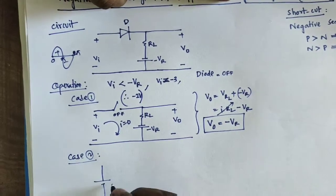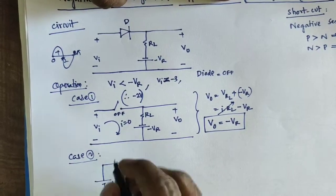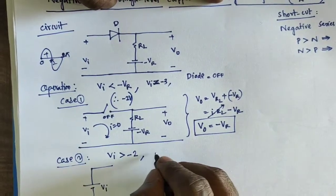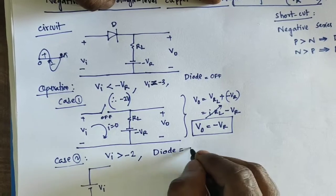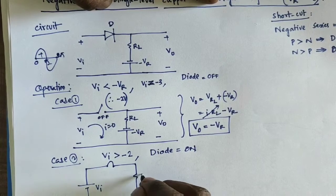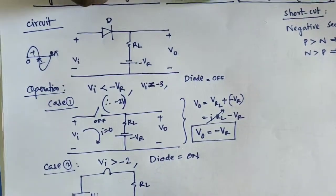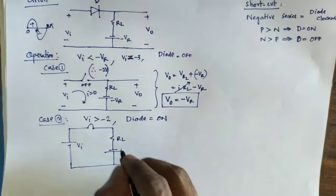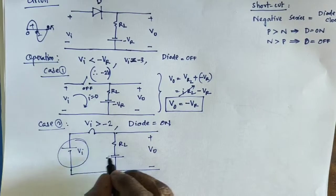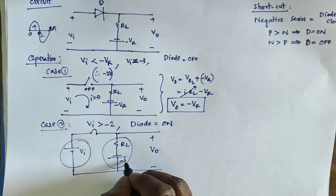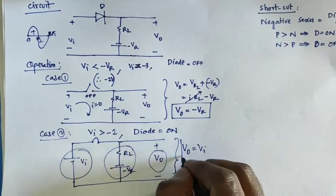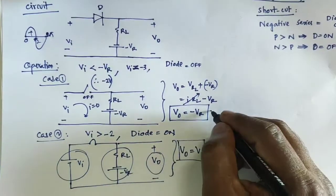For Case 2, the input Vi is greater than minus two volts. In this condition, the diode is in the on state. With load resistor RL and reference minus Vr, the output voltage V_naught equals VRL plus minus Vr. Based on this expression, V_naught is equal to Va.